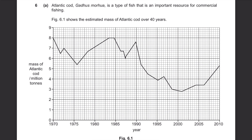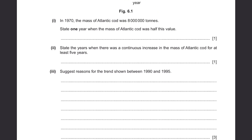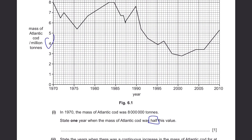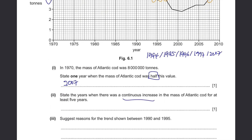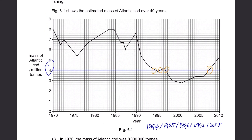Question 6, part A. Atlantic cod is a type of fish important for commercial fishing. Figure 6.1 shows the estimated mass of Atlantic cod over 40 years. In 1970, the mass was 8 million tons — state one year when it was half this value, i.e., 4 million. Just draw a straight line and see where it intersects the graph; I'll go with 2007. For a continuous increase of at least 5 years, you can say from 1976 to 1981.